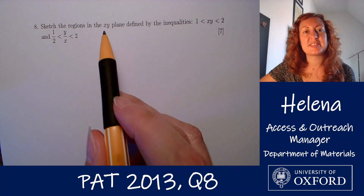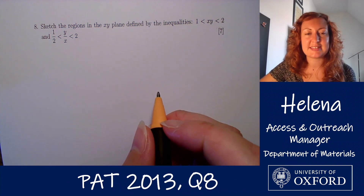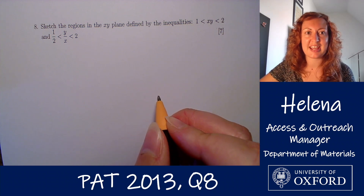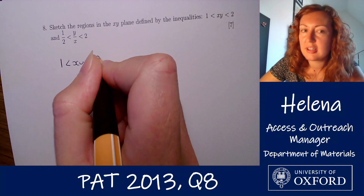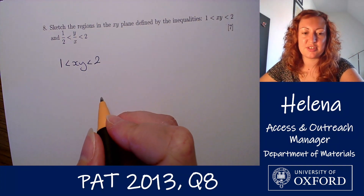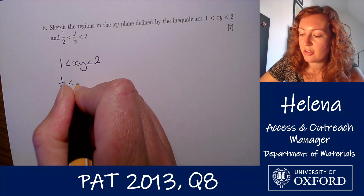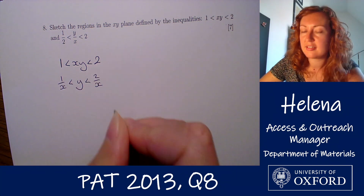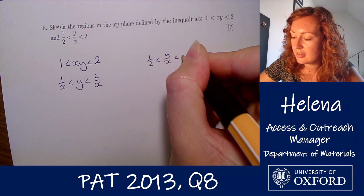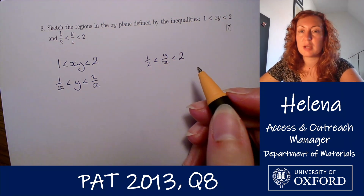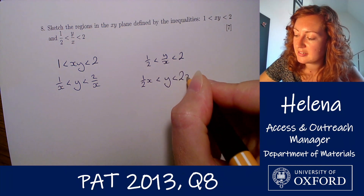If we're being asked to sketch graphs, we want to try and make these inequalities look a bit nicer — something we can use to draw a graph. For the first inequality, I'd like to get it into the form y equals something, so I'm going to divide both sides by x, giving 1/x on the left and 2/x on the right. For the second inequality, I'm going to multiply both sides by x, giving ½x on the left and 2x on the right.